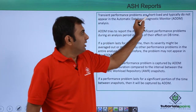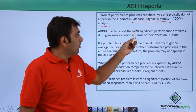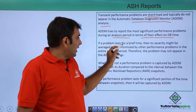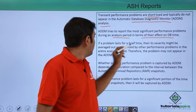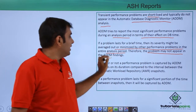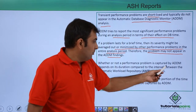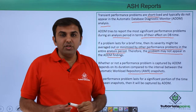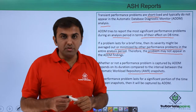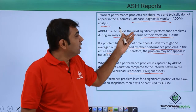Transient performance problems are short-lived and typically do not appear in the automatic database diagnostic analysis. ADDM tries to report the more significant performance problems during the analysis period in terms of effect on DB time. If the problem lasts for a brief time, its severity might be averaged out or minimized by other performance problems in the entire analysis period, and the problem may not appear in the ADDM findings.